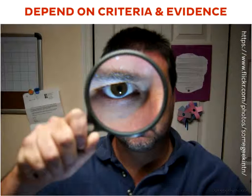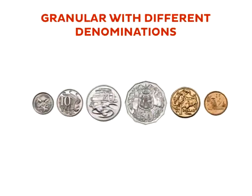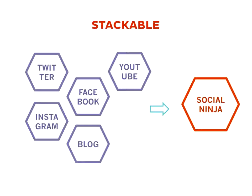Badge value also depends on the criteria and the evidence. The value of the badge is determined by how well the criteria were put together and how well the evidence is presented and shared. Another way they are similar to currency is that they can be granular with different denominations. You could earn five smaller badges — for instance, something I use it for is personal learning networks: you know how to set up a personal identity, how to set up personal information streams — those are all small ones. And then the larger one is: you have achieved the setting up of a personal learning network. So they can fit together and basically be stackable — you can get Twitter, Facebook, blog, YouTube, and then the larger badge: you are a social ninja.